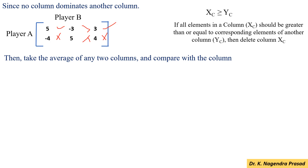So, then we have to take the average of any 2 columns and compare with another column. Here, I am taking the average of the 1st column and the 2nd column elements. The 1st column elements are 5 and minus 4. The 2nd column elements are minus 3 and 5.